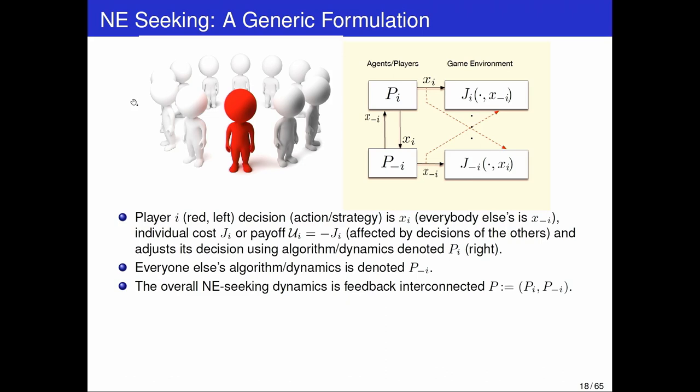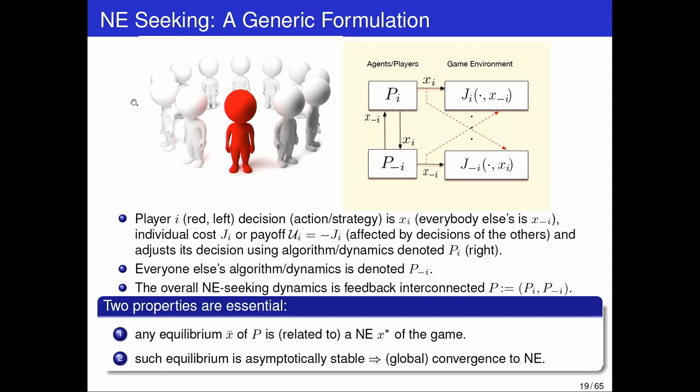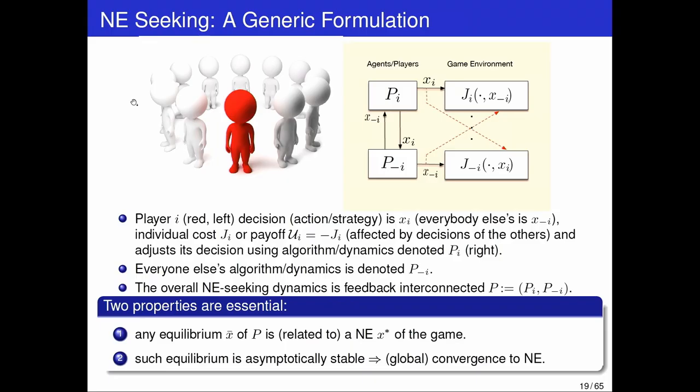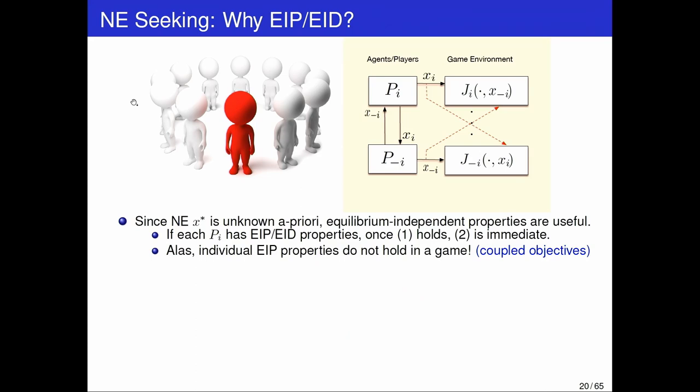What I want from any algorithm is that any equilibrium X-bar of P is related to a Nash equilibrium X-star, and that any such equilibrium is asymptotically stable. If both hold, I have global convergence to a Nash equilibrium. If I only have attractivity, I may have only convergence. Since X-star is unknown a priori, using equilibrium-independent passivity properties would be very useful: whatever I interconnect would hold regardless of the equilibrium.